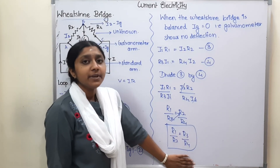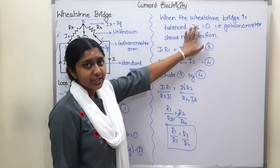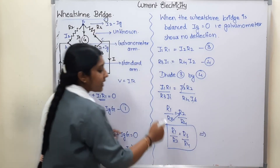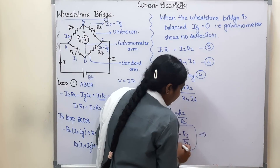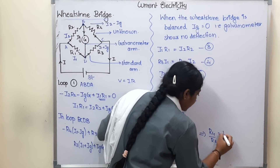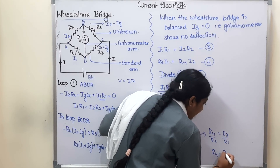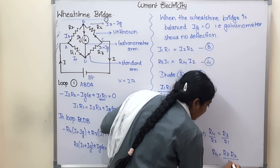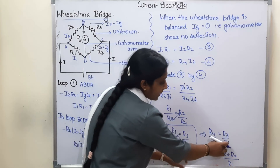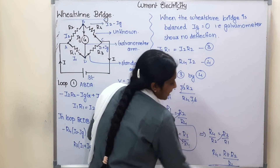This is the balanced condition of a Wheatstone bridge: Ig = 0. Now, how do we find the unknown resistance? If the unknown resistance is R4, then R4 = R3 × R2 / R1. This is the unknown resistance formula.